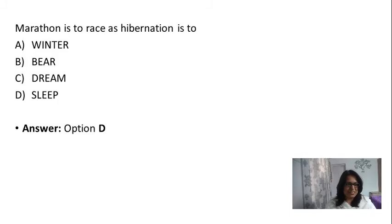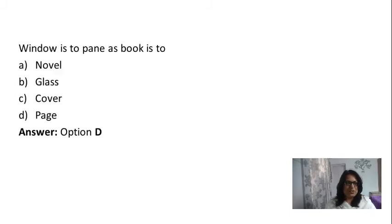The next is window is to pane as book is to. The options are novel, glass, cover, and page, but the correct option is D. Why? When a window is made up of panes and a book is made up of pages.